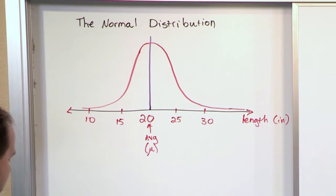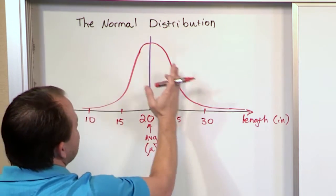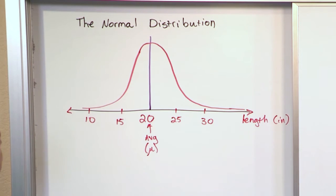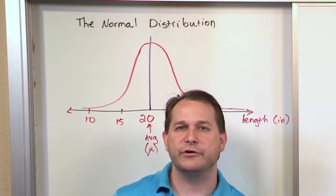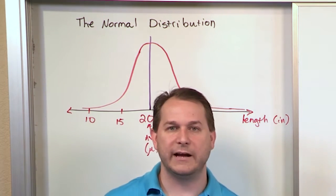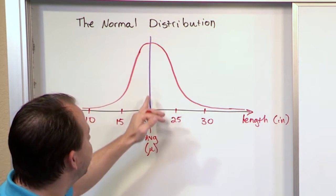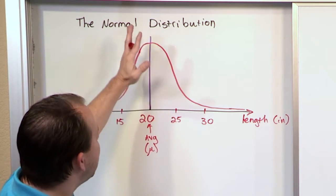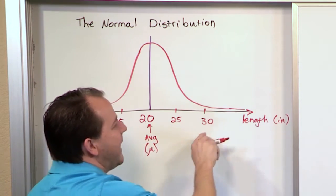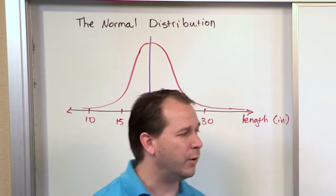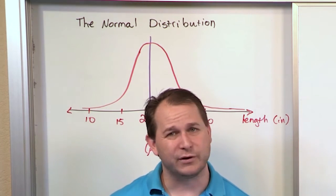This curve represents the probability of selecting different values. The highest probability is always going to happen around the mean, because by definition, if it's the mean value, a large part of your population is going to be right around that value. So the probability of getting a watermelon near the mean is pretty high. As you get farther from the mean, the probability gets lower and lower. If you get 55 or 85 inches way down off the chart, the probability gets super close to zero.